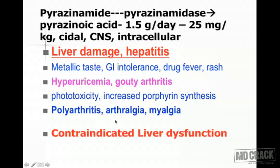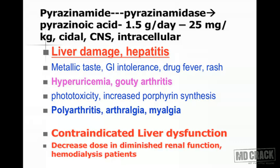Pyrazinamide can also produce arthritis by mechanisms beyond uric acid elevation, leading to polyarthritis, arthralgia, and myalgia. It is contraindicated in patients with liver dysfunction. Dose reduction is required in diminished renal function and in patients on hemodialysis. Key adverse effects to remember: liver damage, hyperuricemia/gouty arthritis, and polyarthritis/arthralgia/myalgia.